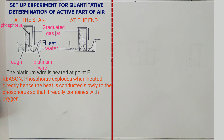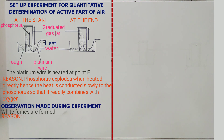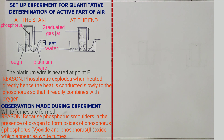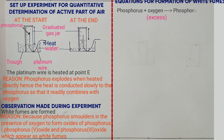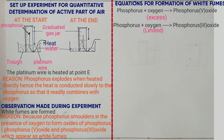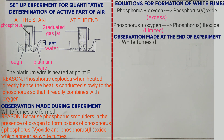The observation made during the experiment is white fumes are formed. The reason is phosphorus smolders in the presence of oxygen to form oxides of phosphorus — phosphorus(V) oxide and phosphorus(III) oxide — which appear as white fumes. The equations: phosphorus plus excess oxygen gives phosphorus(V) oxide; phosphorus plus limited oxygen gives phosphorus(III) oxide. Observation at the end of the experiment: white fumes disappear, because the oxides of phosphorus dissolve in water to form an acidic solution.